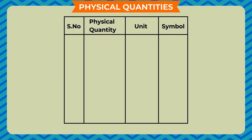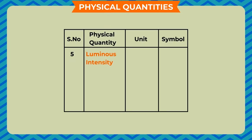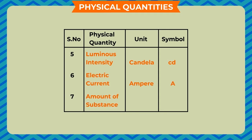The 7 fundamental physical quantities with their SI units and symbols are: mass — kilogram (kg), length — meter (m), time — second (s), temperature — kelvin (K), luminous intensity — candela (cd), electric current — ampere (A), and amount of substance — mole (mol).